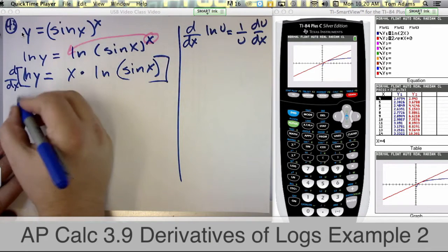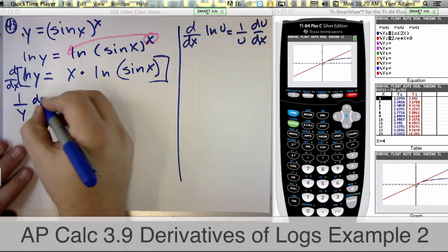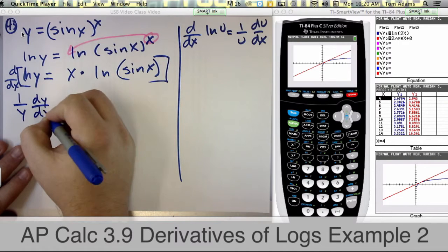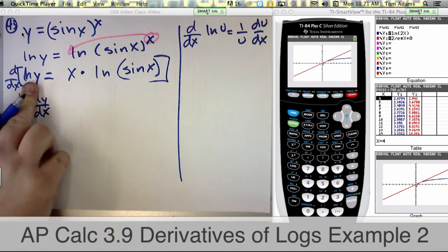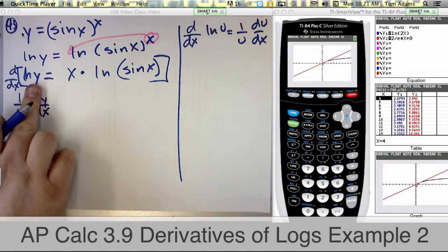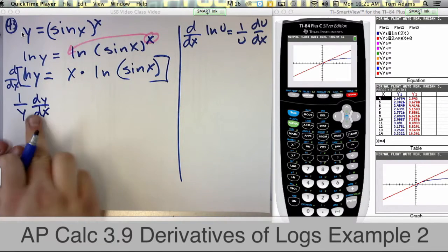So then this becomes 1 over y dy dx. Because remember, we're doing the derivative implicitly. So whenever we take the derivative of y, we treat it like x, but we tack on dy dx at the end.